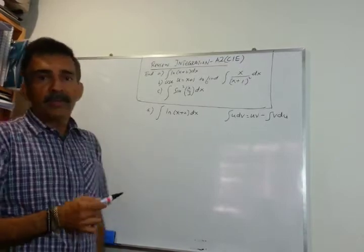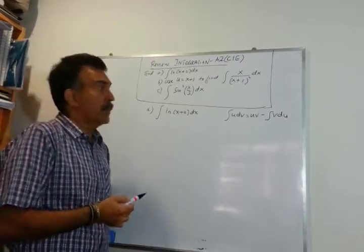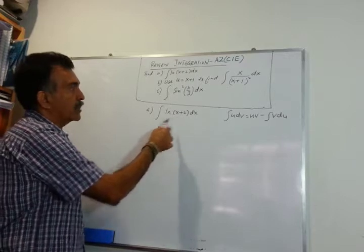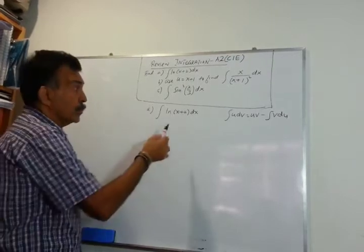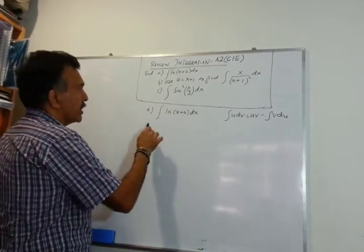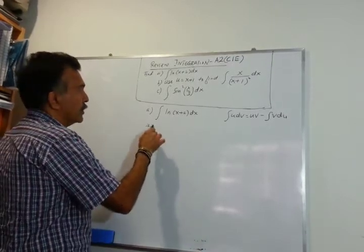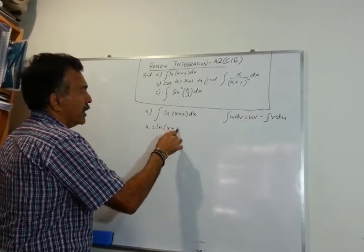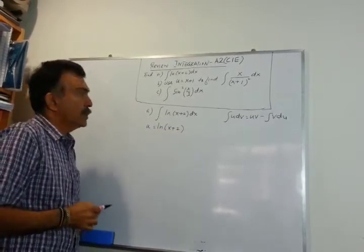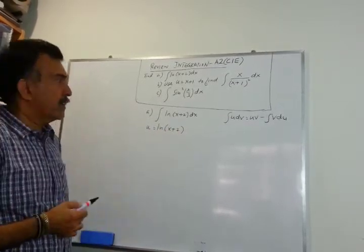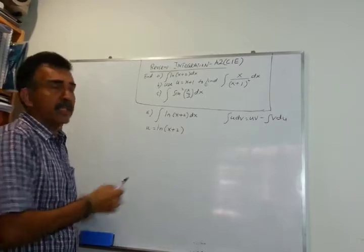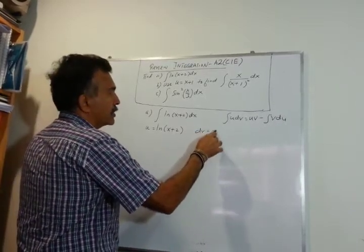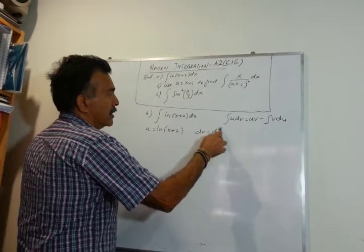If we are going to use by parts in any problem involving logs, the log function is going to be your u. So let's write u equals ln(x+2). What's left becomes dv, so dv equals dx.